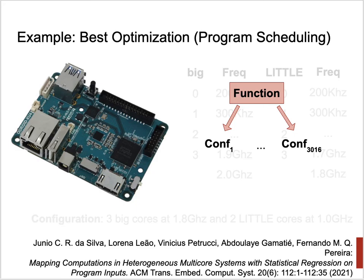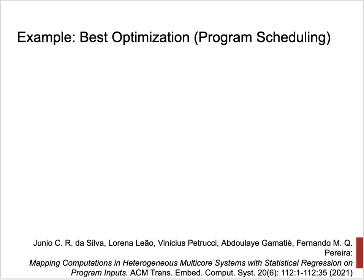Interestingly, it can make sense to assign a program to a less powerful configuration. For instance, if a program has a lot of synchronization, it makes sense to avoid using the big cores, as there will be more conflicts between threads. Similarly, if there is a lot of branch misprediction, it makes sense to prefer the little cores, since branch mispredictions are cheaper there.